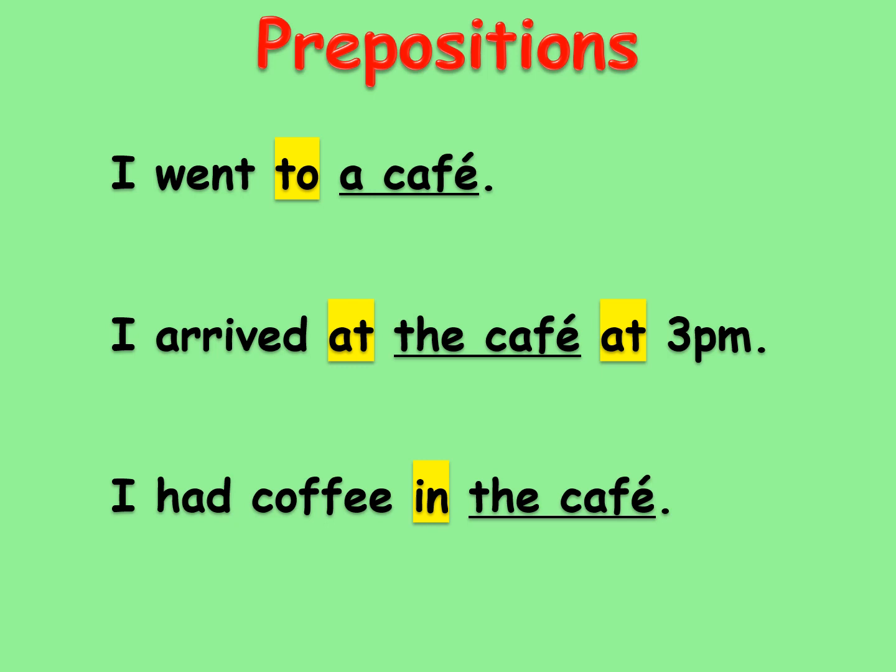Prepositions in English are called prepositions because they are placed in front of a noun and connect that noun to the rest of the sentence. For example: 'I went to a cafe,' 'I arrived at the cafe at 3 p.m.,' and 'I had coffee in the cafe.' Even though the noun the prepositions are connecting is all 'cafe,' three different prepositions are used here.